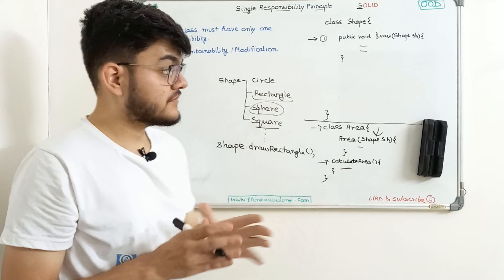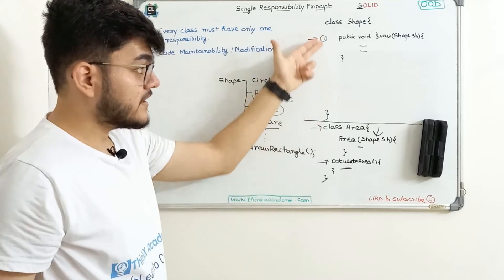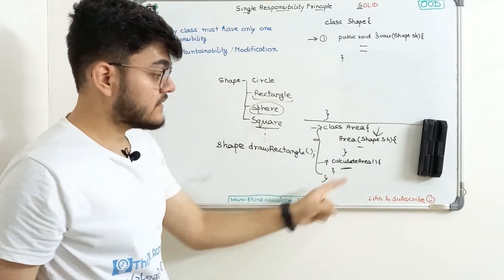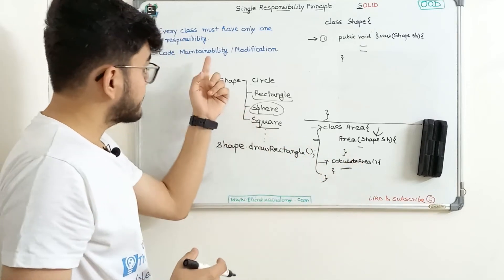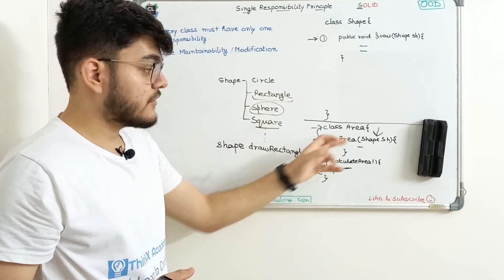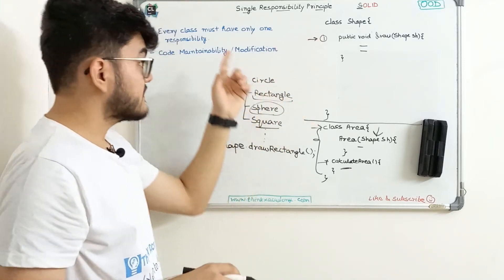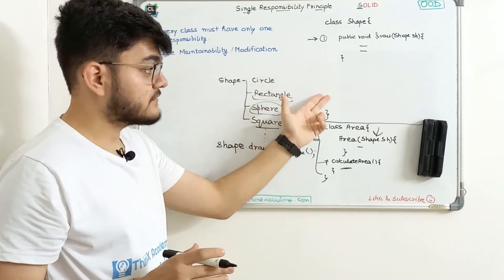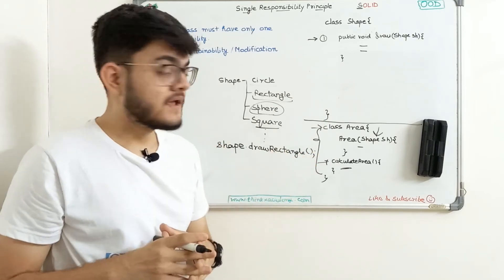This solves a lot of issues. Whenever I want to modify the drawing algorithm, I jump directly to the Shape class. Whenever I want to modify the area calculation, I modify only the Area class. The idea is simple: for different responsibilities, create separate classes. This gives us clear maintenance and modification advantages.